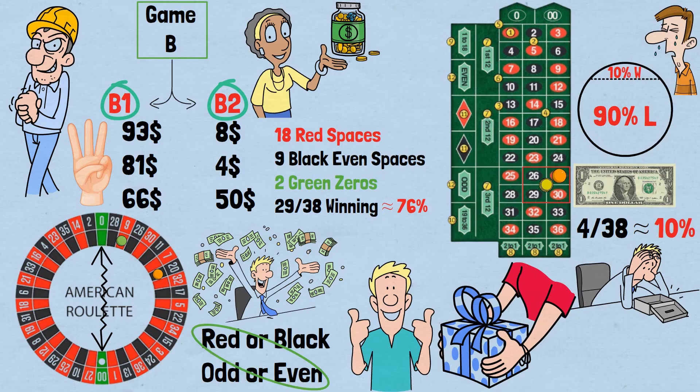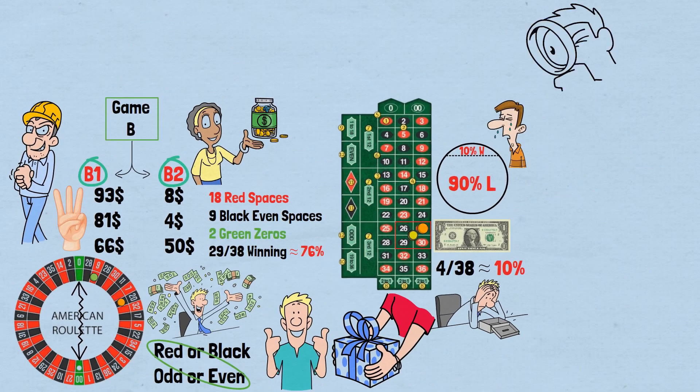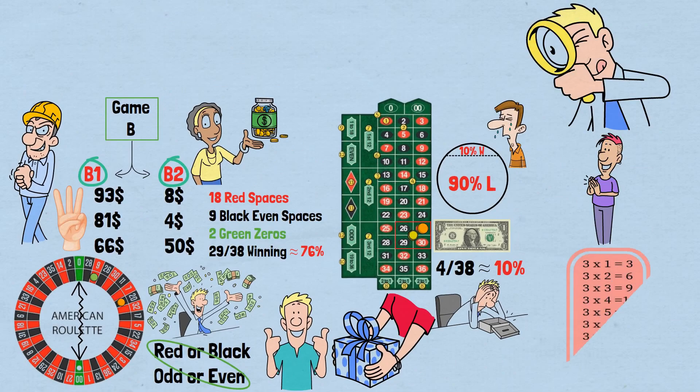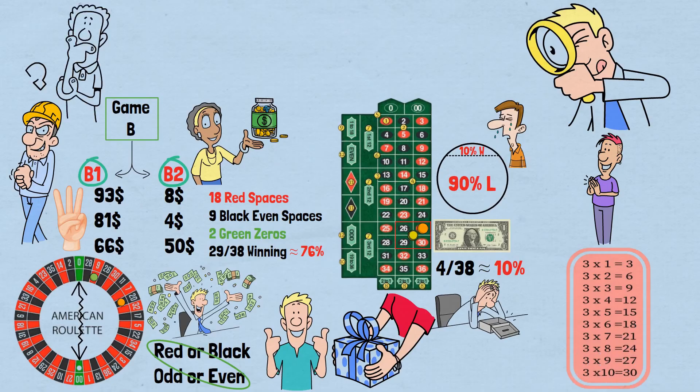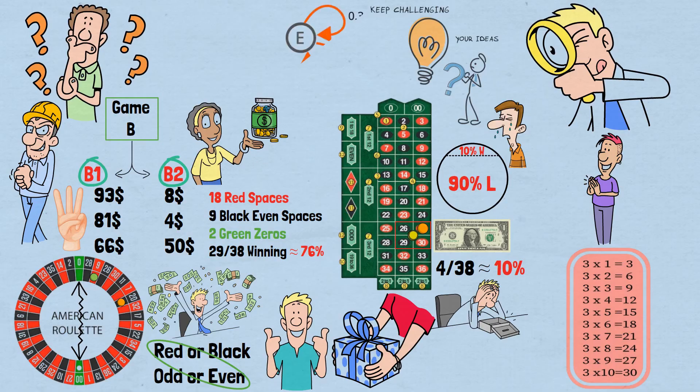At first glance, Game B seems promising. Since there are more possible money amounts that aren't multiples of three than there are amounts that are multiples of three, you should be playing the favorable B2 game more often than the terrible B1 game, right? Here's where the mathematics becomes counterintuitive. Game B is actually what mathematicians call a Markov chain—a stochastic process where your future depends on your current state, not your history.